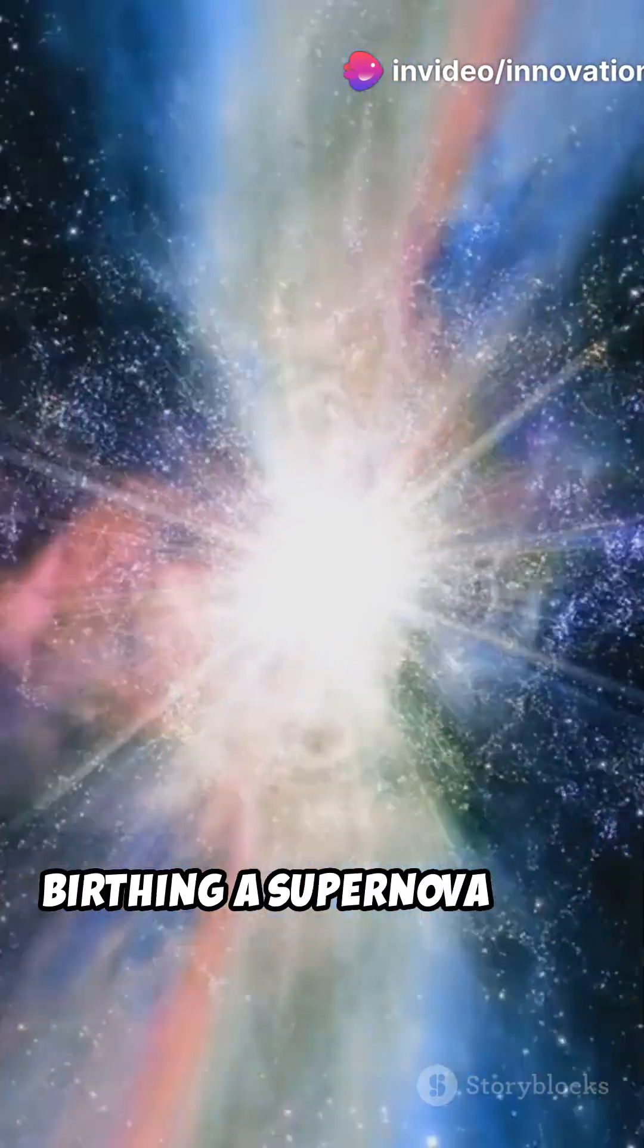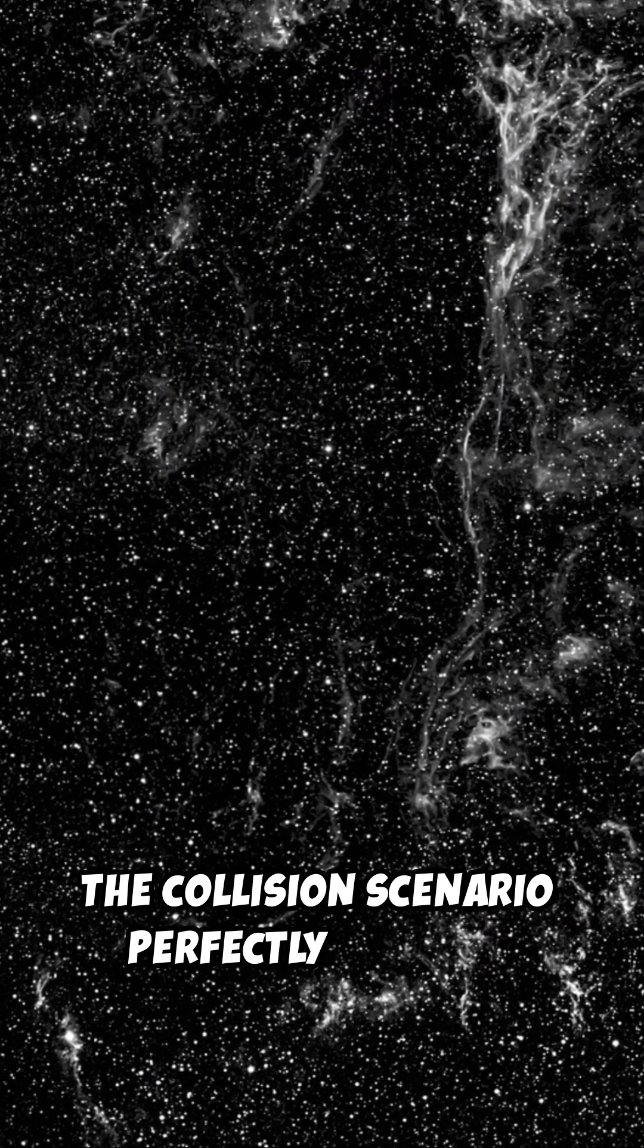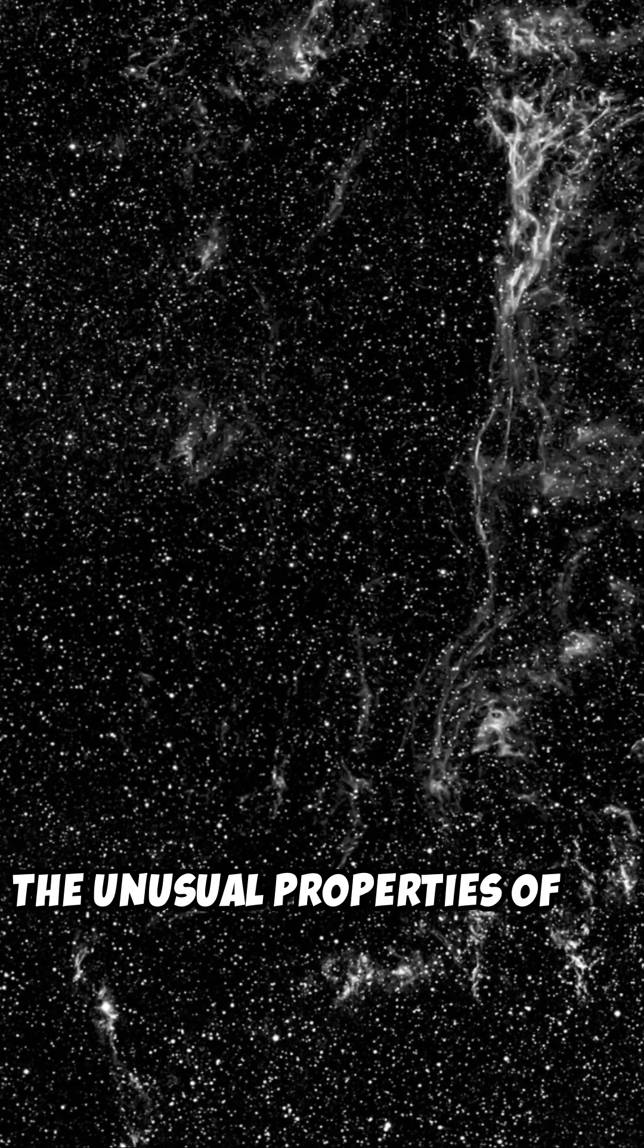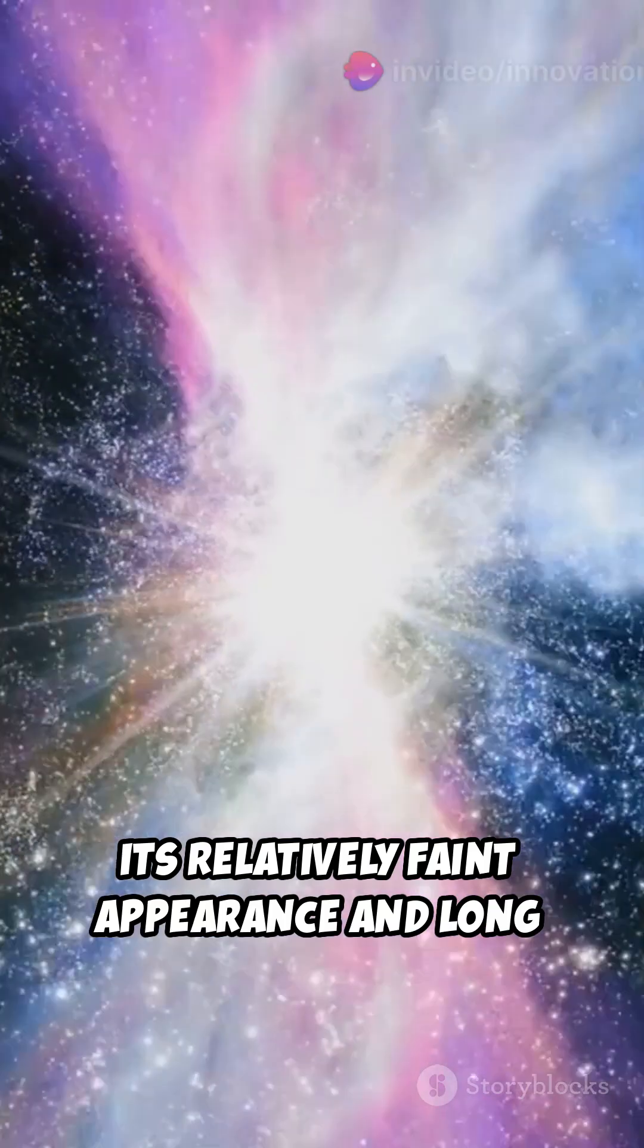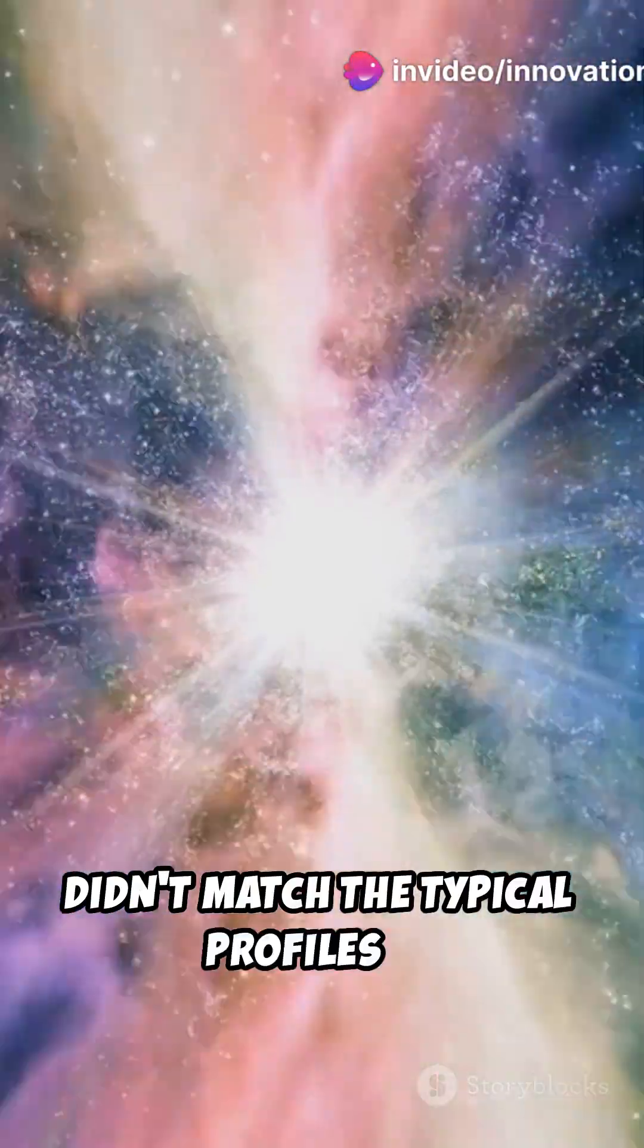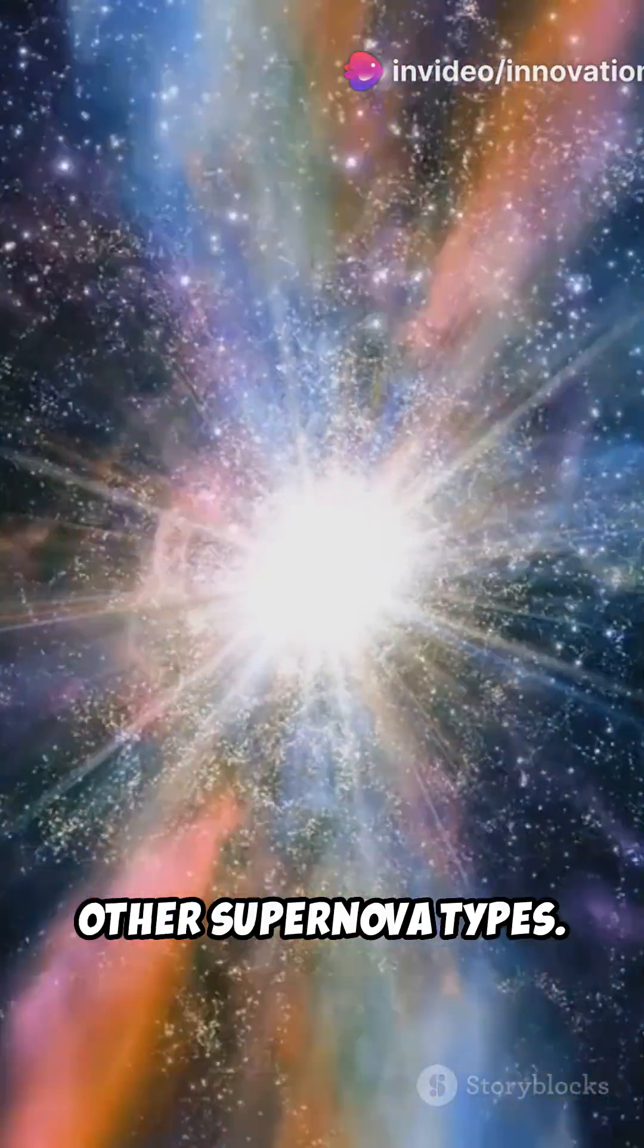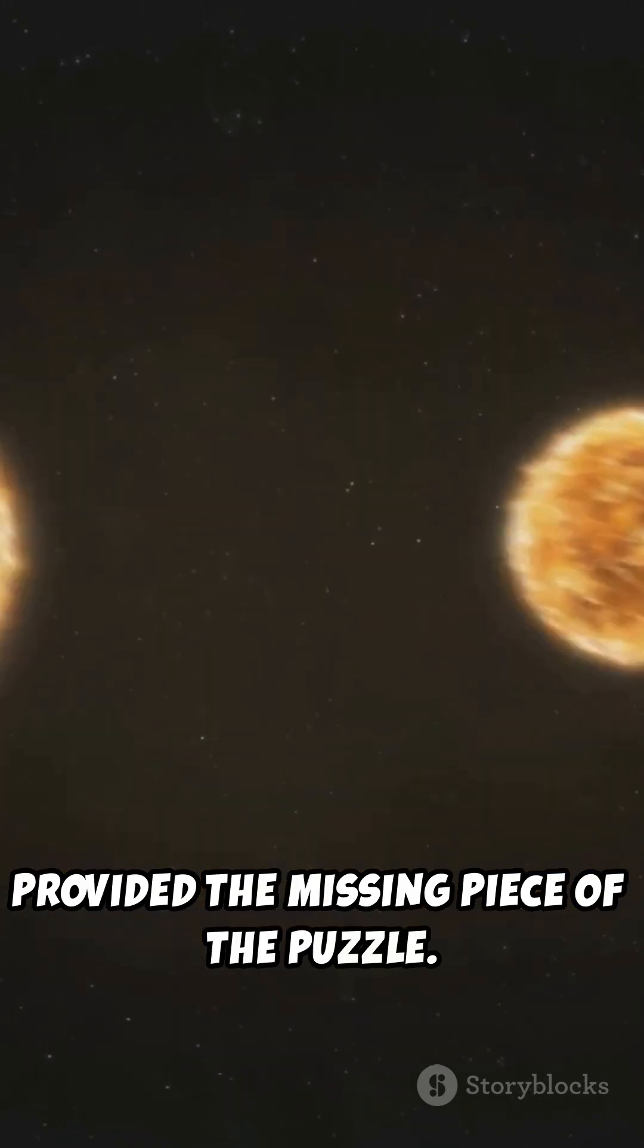This births a supernova that can briefly outshine billions of stars. The collision scenario perfectly explains the unusual properties of SN 1181. Its relatively faint appearance and long duration, as recorded by ancient astronomers, didn't match the typical profiles of other supernova types. The merging of white dwarfs—a rare event in itself—provided the missing piece of the puzzle.